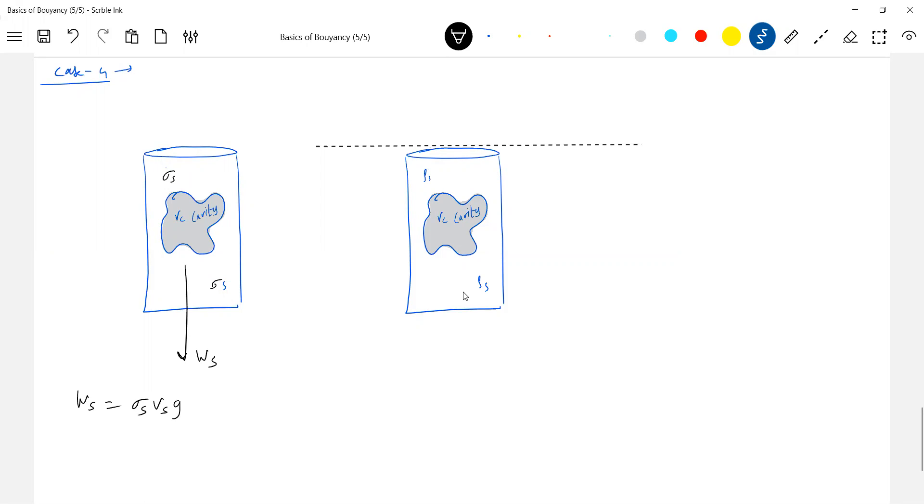What is Vs? Vs is where the material is present. The cavity is what I'm showing. Remaining all is material. So let's say it's gold. That everything is what Vs. Don't write volume of cylinder. Volume of solid means where all the material is present, where the solid is present.